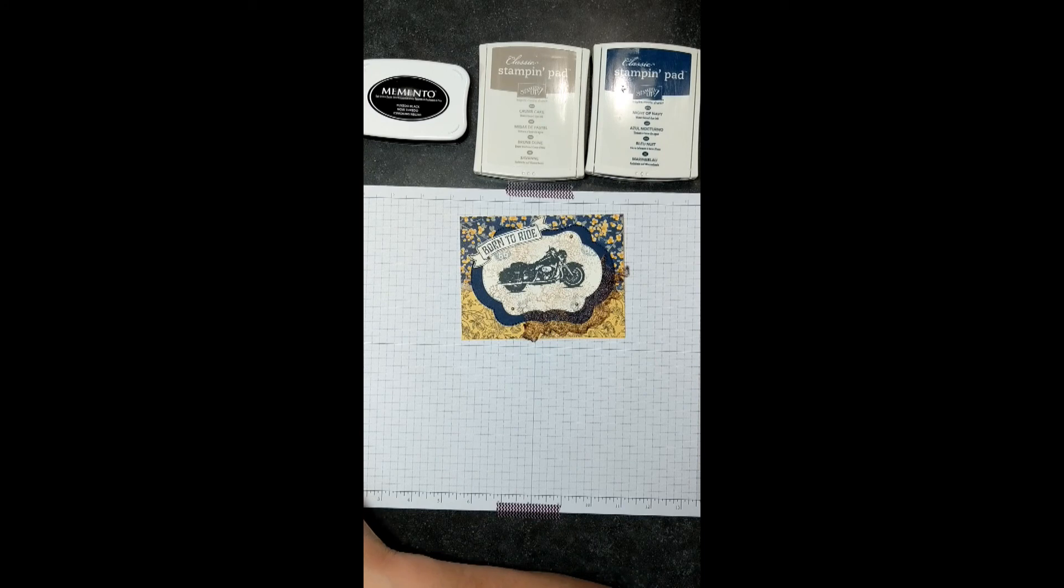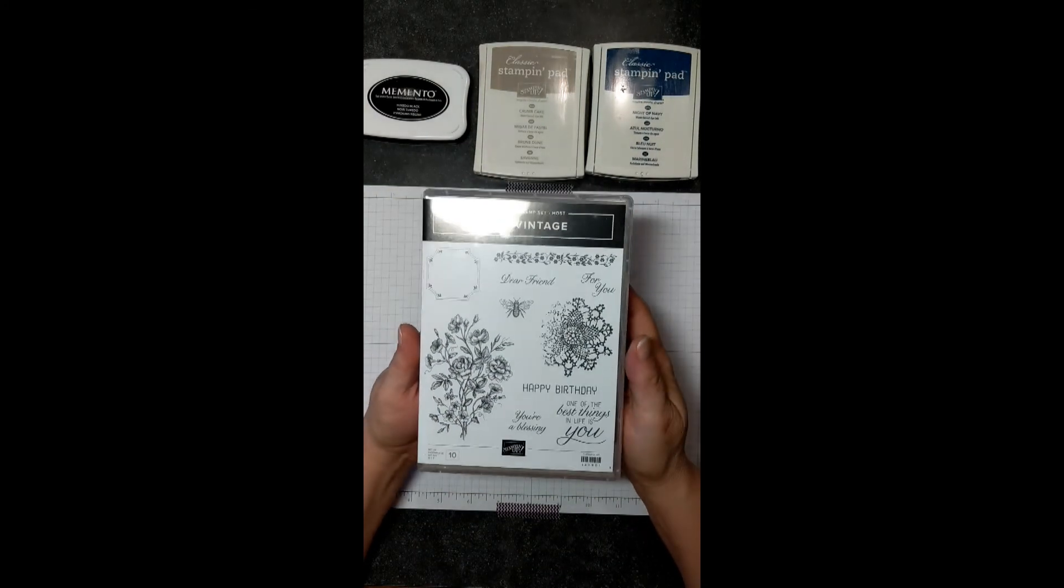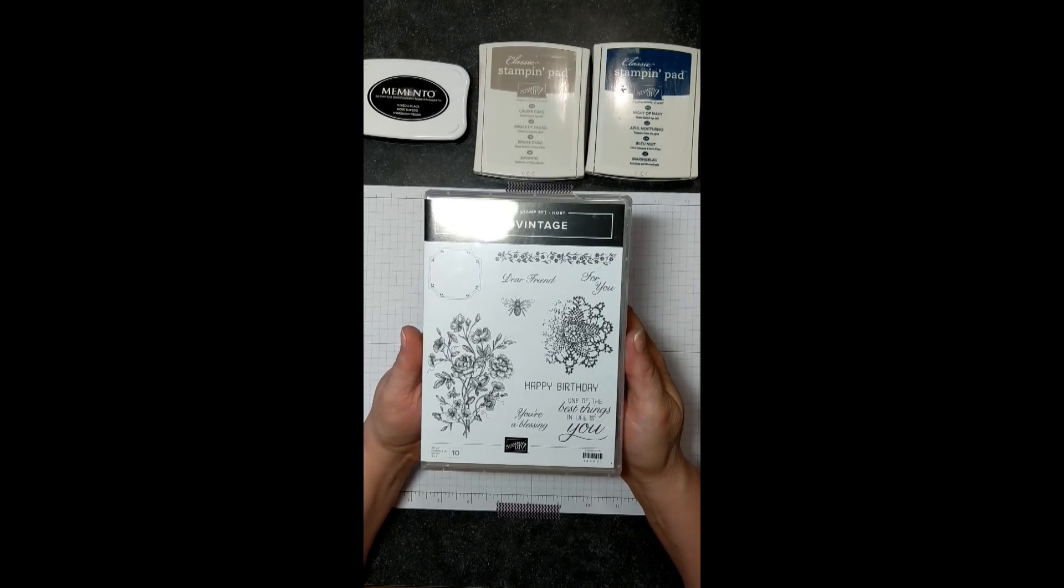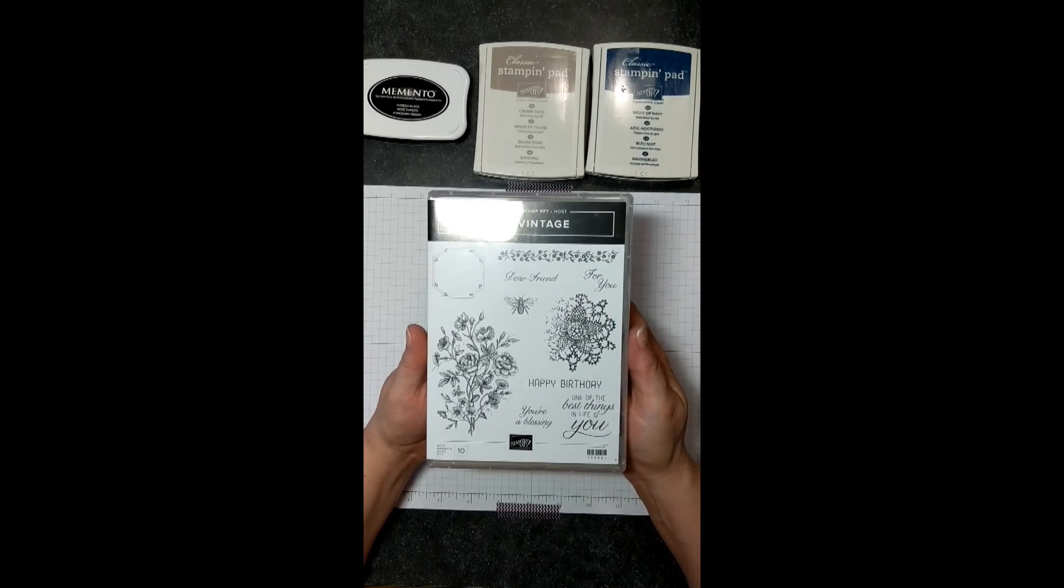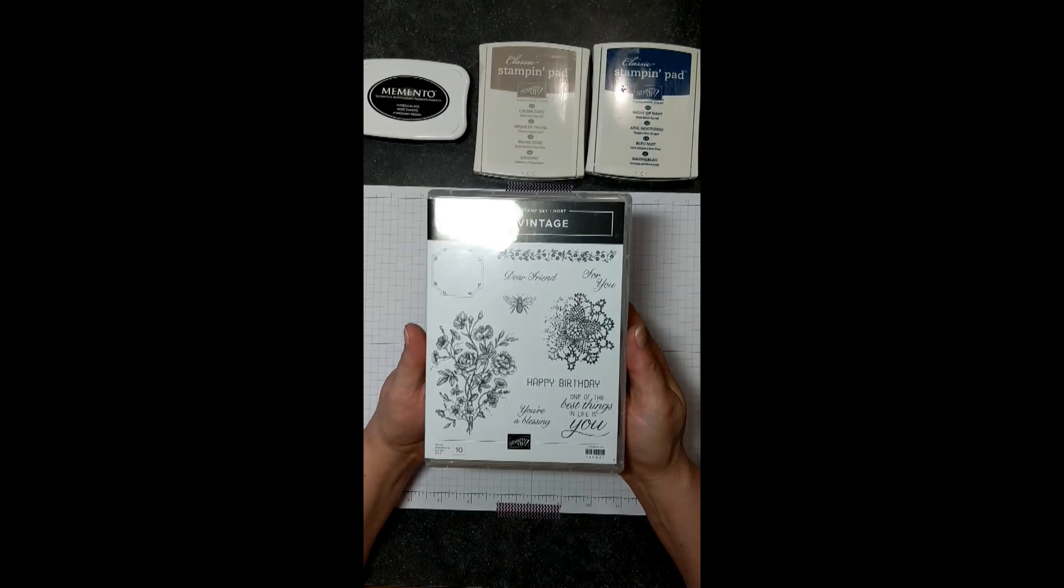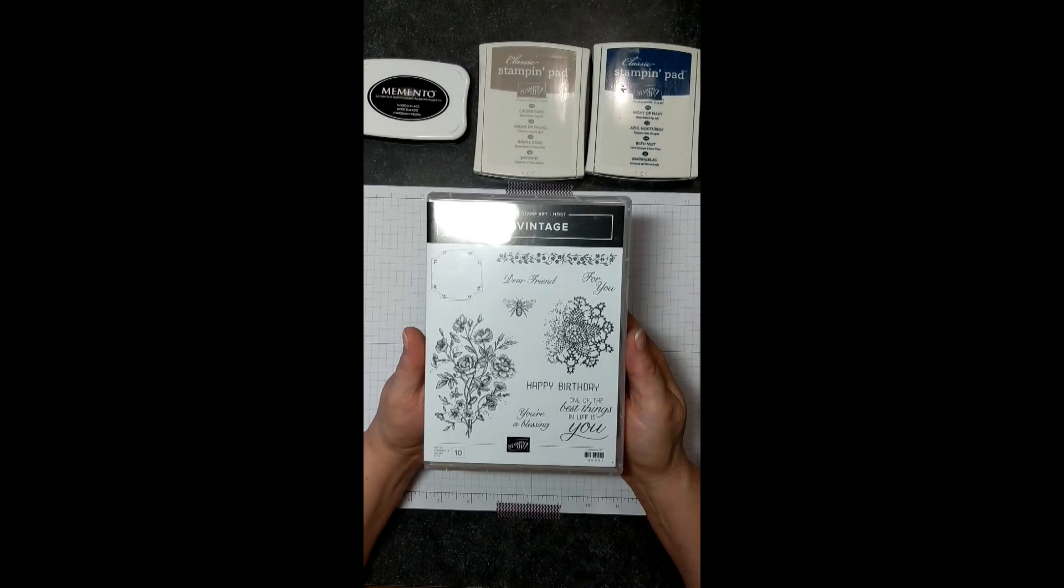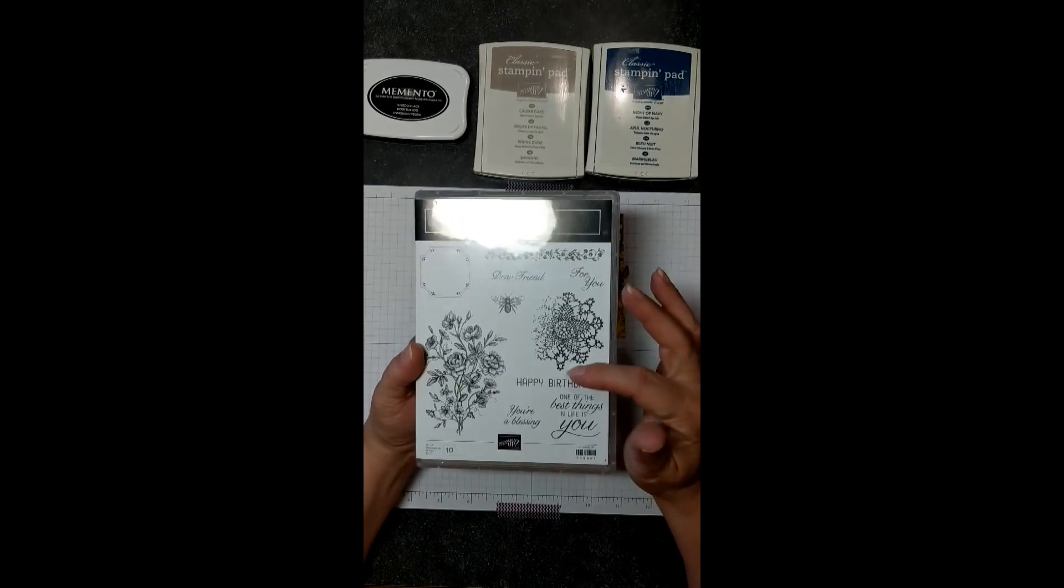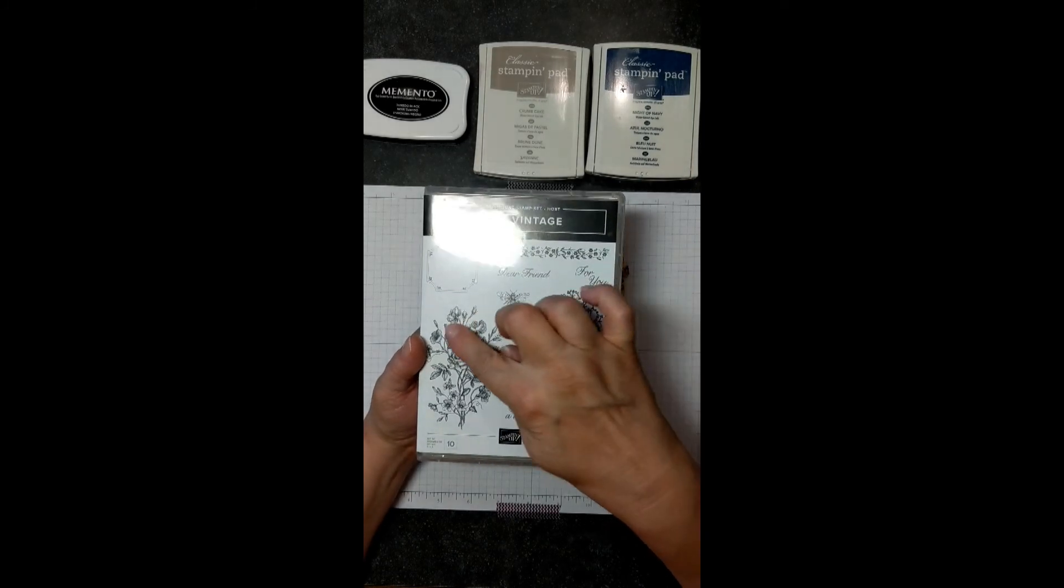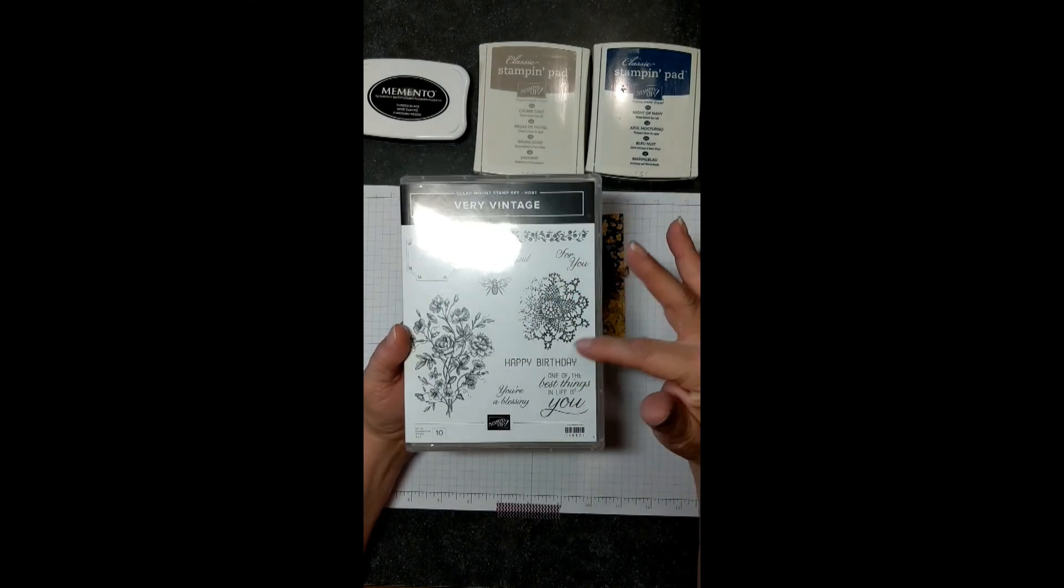The first things that we're going to need are our stamp sets. We will be using Very Vintage. This is a clear mount stamp set. It's a host set. The only way you can get this set is by having a party that qualifies, which would be $150 or more, or you place your own order of $150. Out of this set, we will be using the Floral Design, the Doily Design, and Happy Birthday.